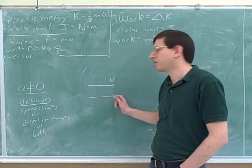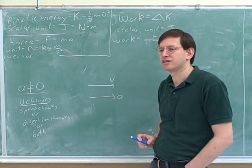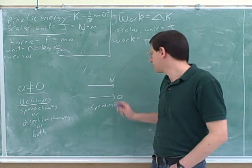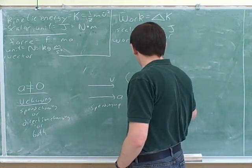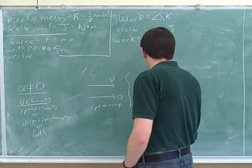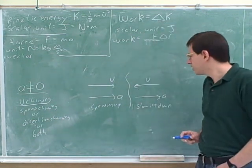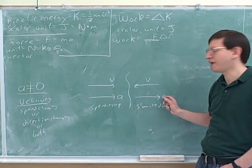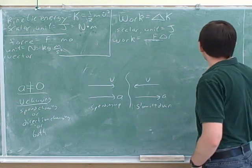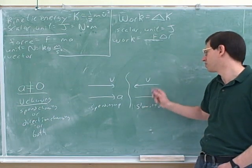Let's see how we can determine which is changing. We know we have a non-zero acceleration. Notice that this acceleration is parallel to the velocity — does this mean we're changing speed or direction? Speed. Speeding up or slowing down? When the velocity and the acceleration are parallel, that means you're speeding up. When the acceleration is anti-parallel to the velocity, you're slowing down. What matters is not the sign, but whether the acceleration is parallel or anti-parallel to the velocity.